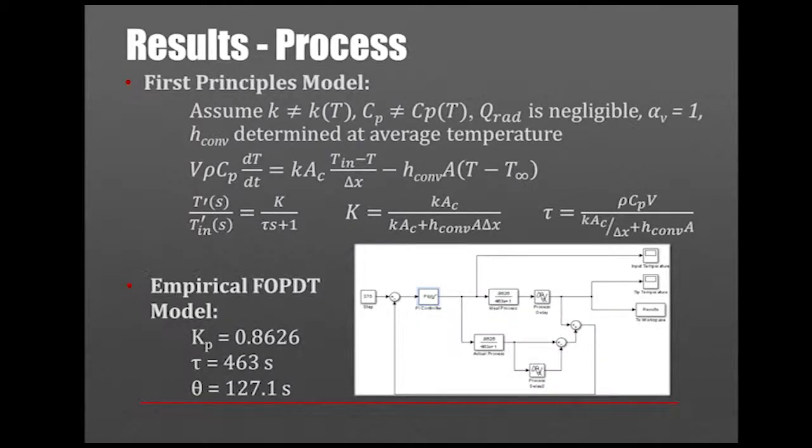In determining our first principles model, we divided the rod into 10 different sections and did an energy balance on each section or disc. We made the assumptions that the conduction coefficient, heat capacity, and convection coefficient are all constant regardless of temperature to simplify it, determining those values at an average temperature. We also assumed that heat loss from radiation is negligible compared to convection and conduction, and that the volume doesn't change due to thermal expansion.